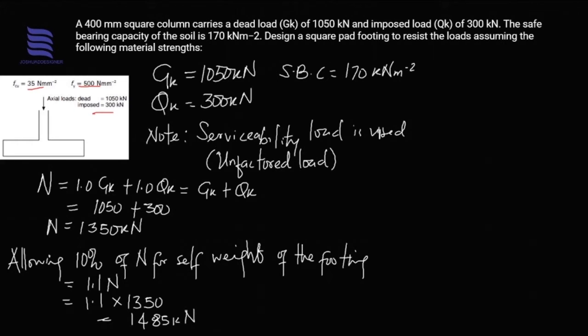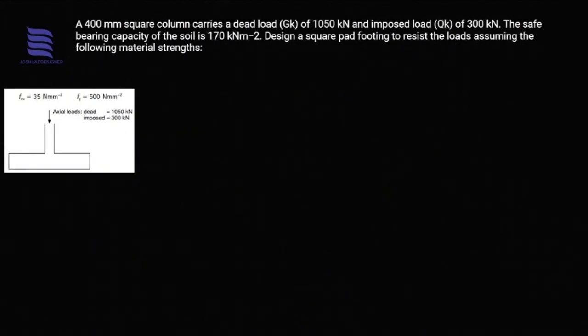This is exactly what we use to obtain our base area. Going forward now, since we have the value of N to be 1485 kilonewtons with the self-weight of the base inclusive, we can obtain the area of base.